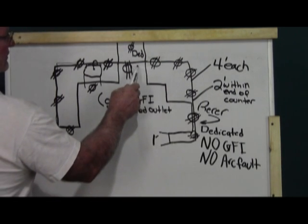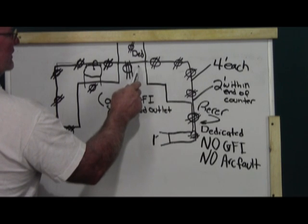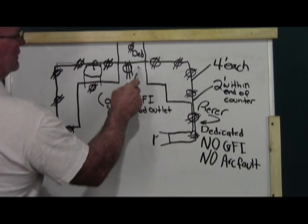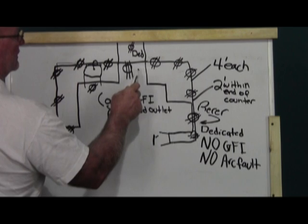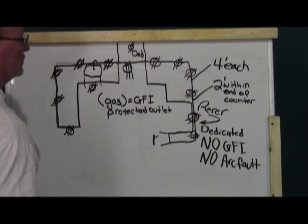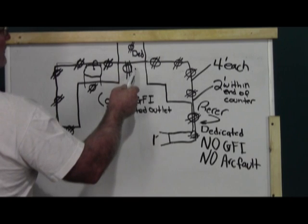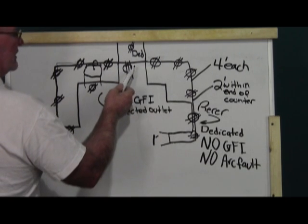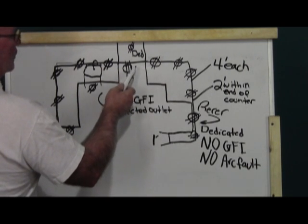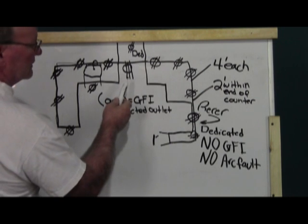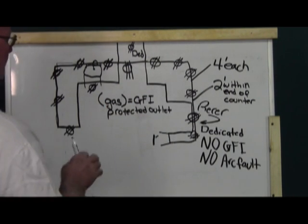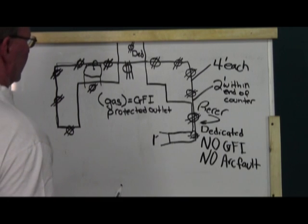If you have a gas appliance, you can get away with just a standard outlet here, non-GFI protected. And if an inspector's cool, he'll let you drop down off the dedicated microwave because a gas oven takes about a quarter of an amp to operate. So that kind of covers the kitchen in a nutshell.